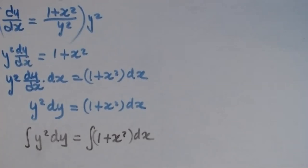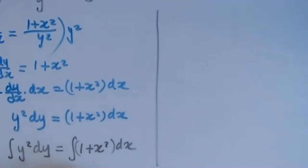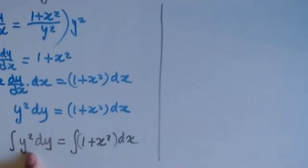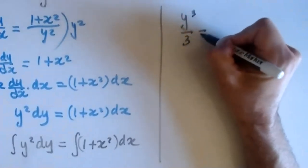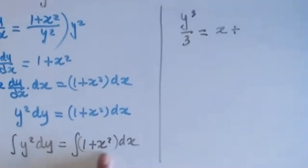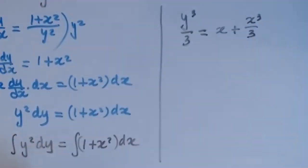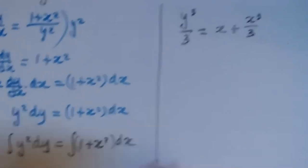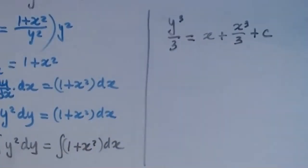Computing the antiderivatives: the antiderivative of y² is y³/3. The antiderivative of 1 is x, and the antiderivative of x² is x³/3. So: y³/3 = x + x³/3 + C.